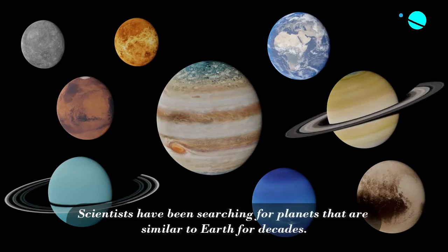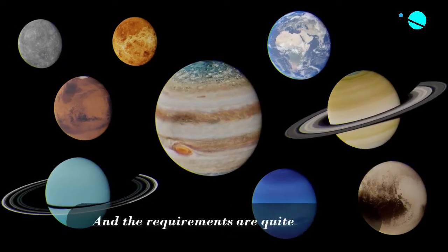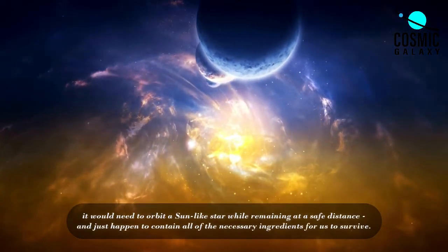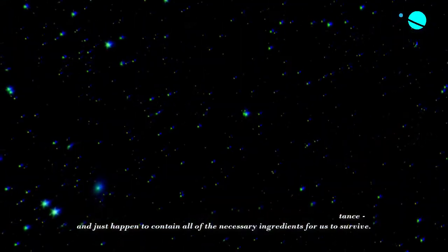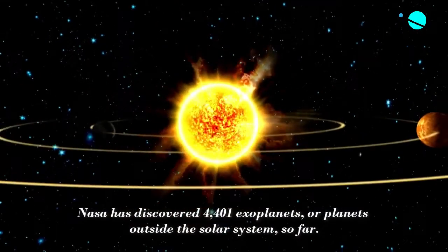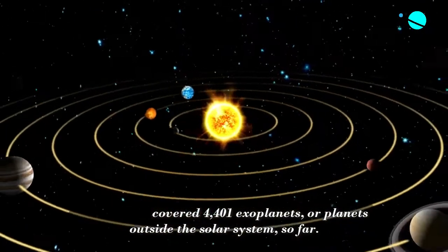Scientists have been searching for planets that are similar to Earth for decades, and the requirements are quite stringent. It would need to orbit a Sun-like star while remaining at a safe distance and contain all of the necessary ingredients for us to survive. NASA has discovered 4,401 exoplanets, or planets outside the solar system, so far.